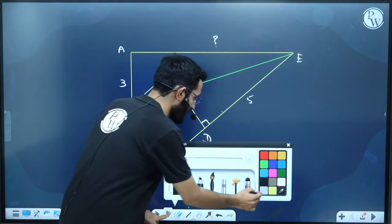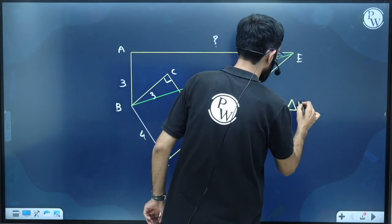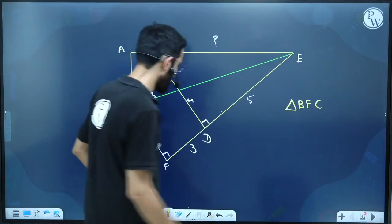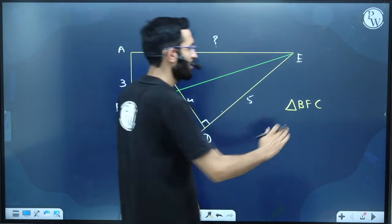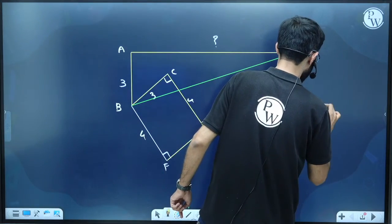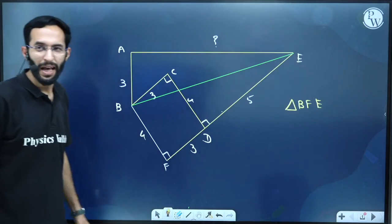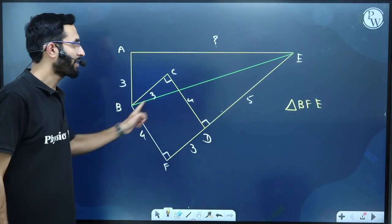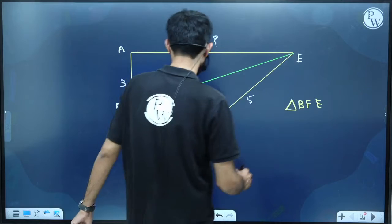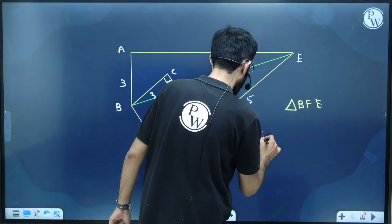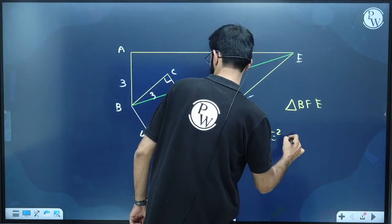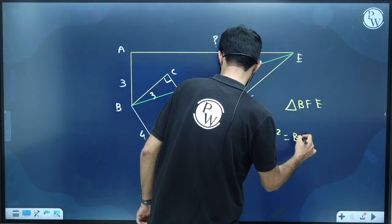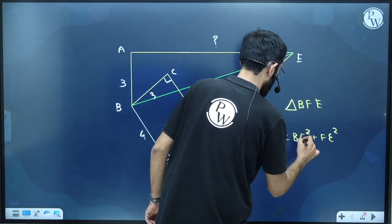In this right angle triangle BFC, if I apply Pythagoras, this is right angle triangle BFE. If I apply Pythagoras theorem, from Pythagoras theorem I can find BE. So here, BE square will be BF square plus FE square.